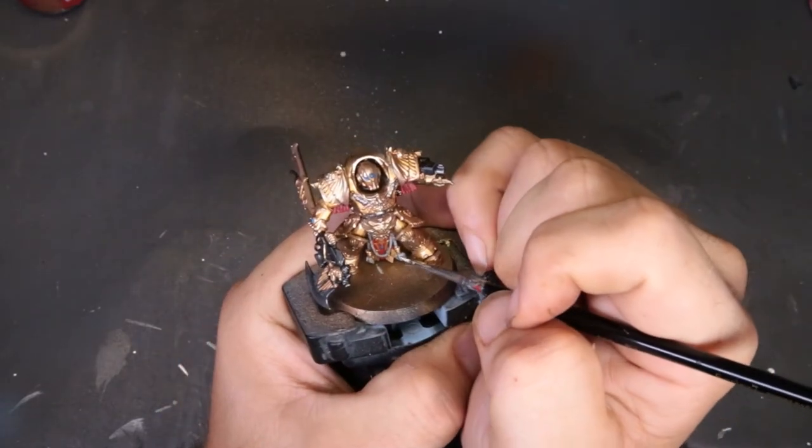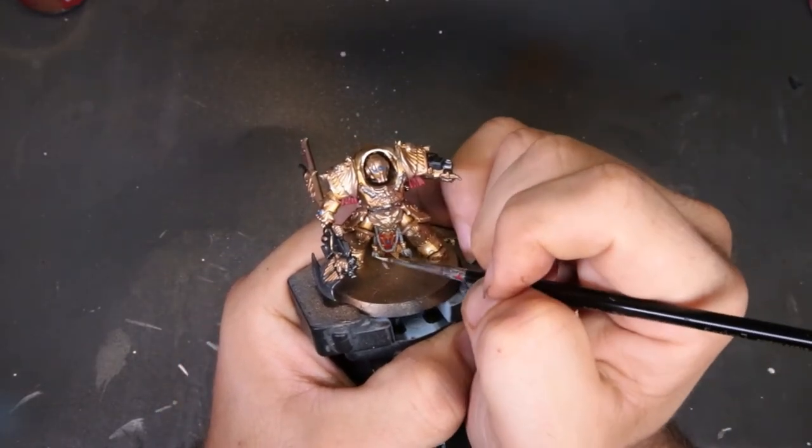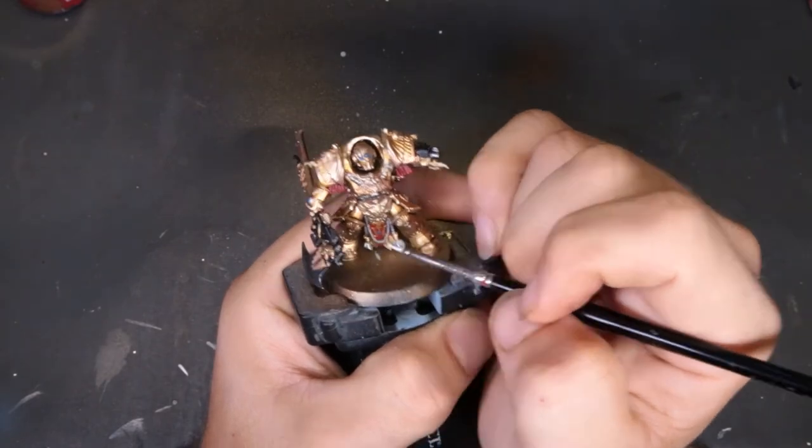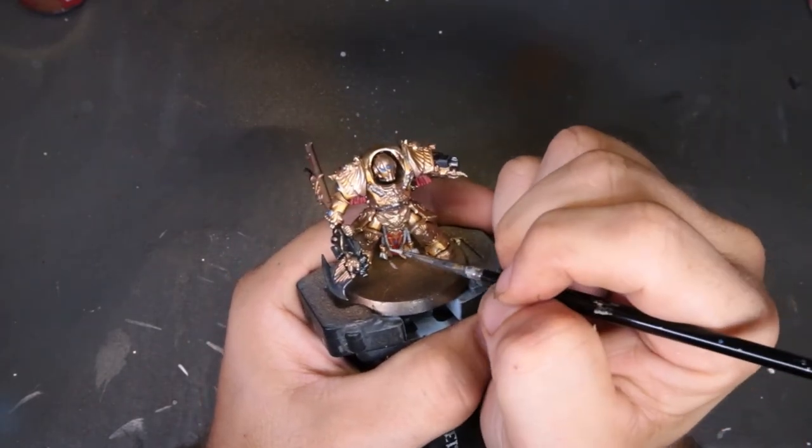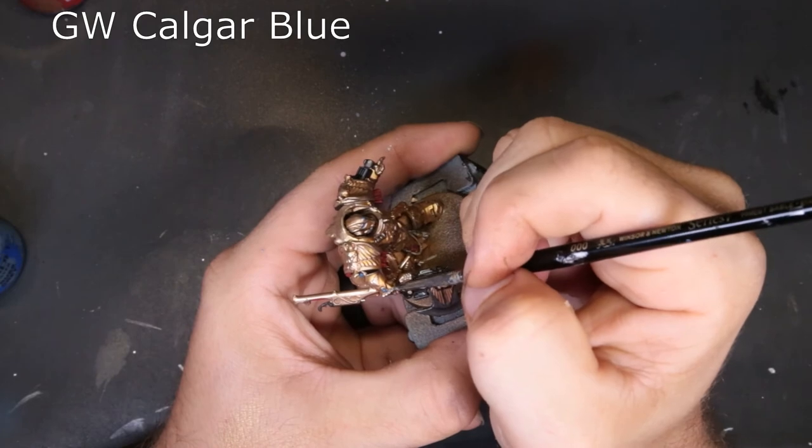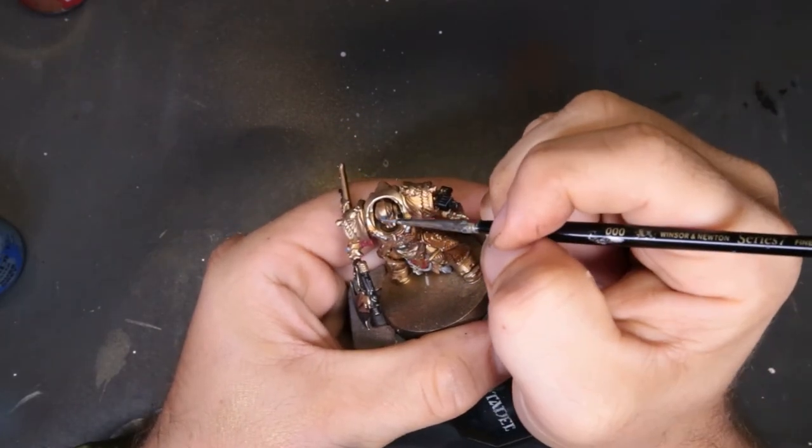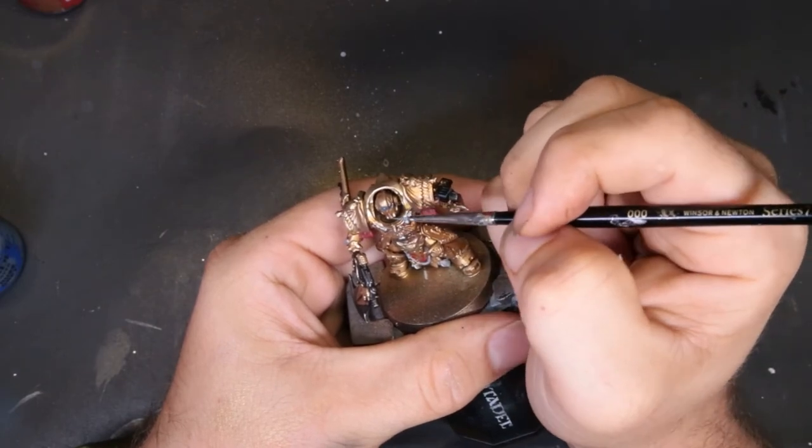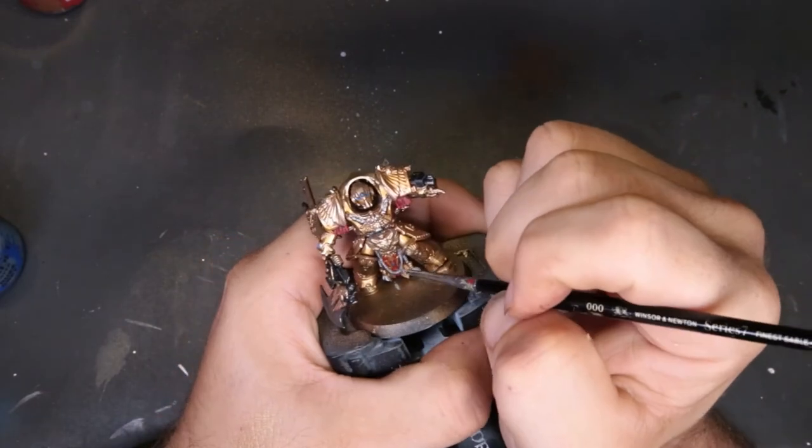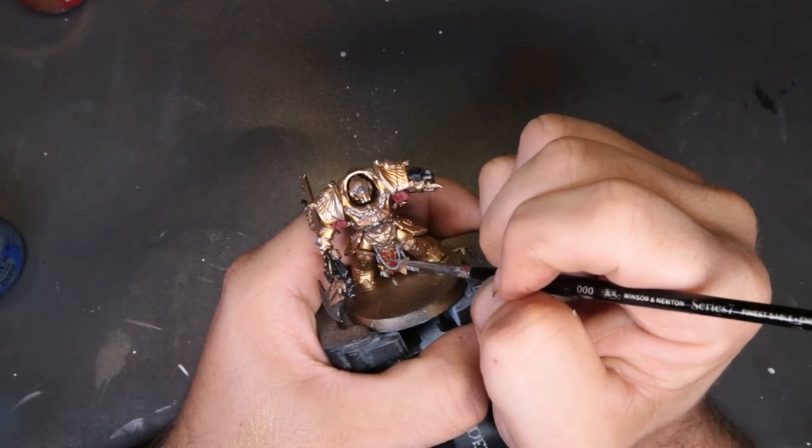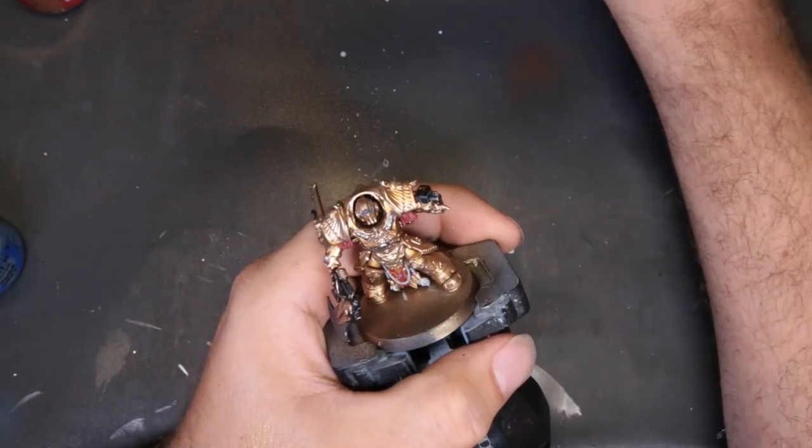To continue back to our stones now, we come through with Calgar Blue. Again, all we're doing here is starting with our base deep blue, coming in, highlighting that up on every single gem around his body. Eventually we're going to come through with Ceramite White and have it its brightest point and they look like good gems.